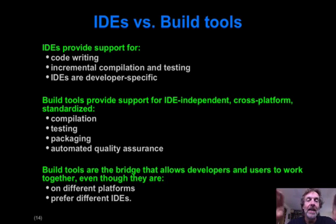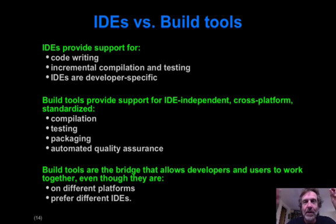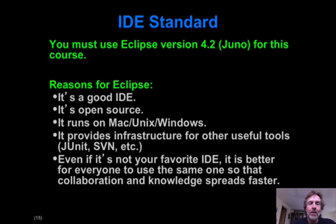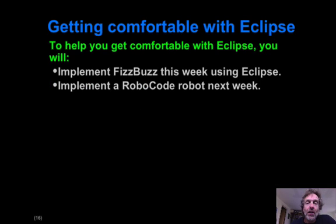Build tools provide an independent manner to build the system apart from using the IDE. They can also be made part of a tool chain, allowing you to automatically build the system. In this class, we're going to use Eclipse version 4.2 — it's not necessarily the best IDE for Java programming, but it is open source and freely available, and it's good for us to have a standard. This week you'll be writing the FizzBuzz program using it, and next week we'll delve into Robocode, which will give you a chance to exercise your Eclipse coding skills even more.